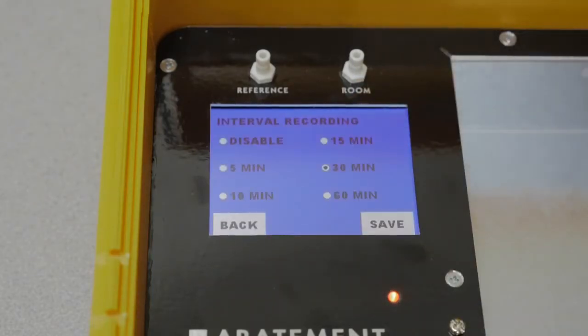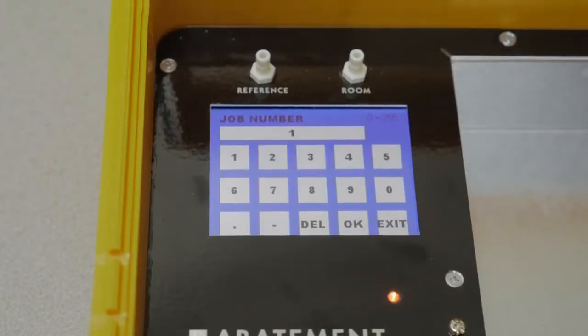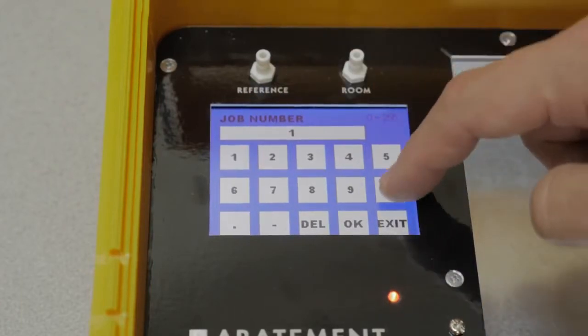Interval recording controls how often the monitor will take data. Job number will give you an identifier in the log for which reading goes with what job or which room.